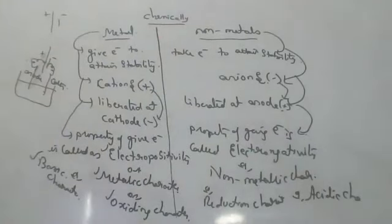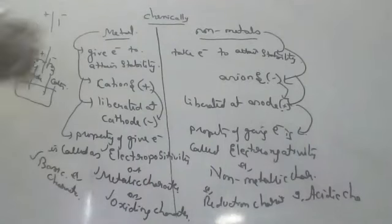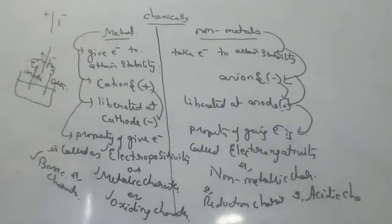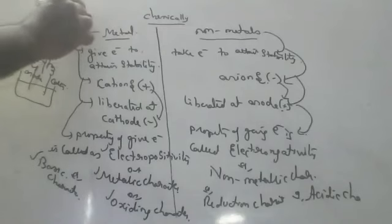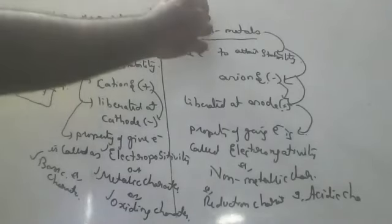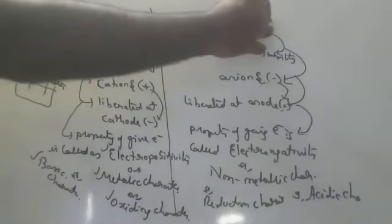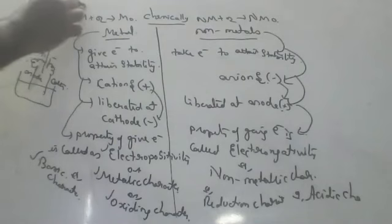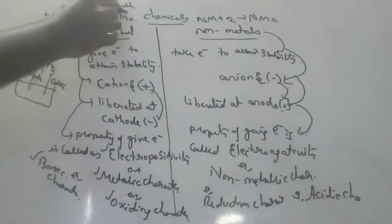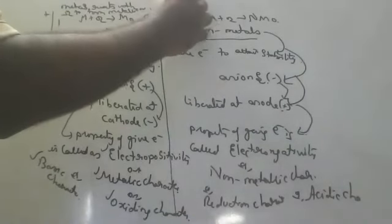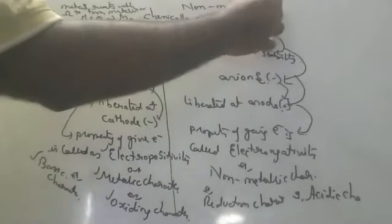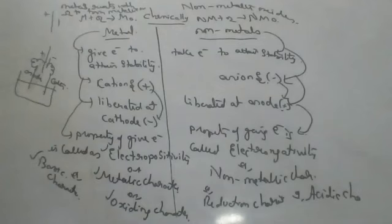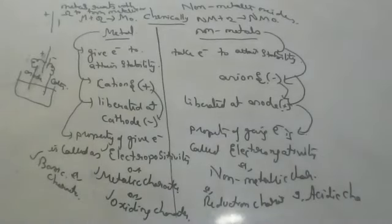One more chemical difference: metals react with oxygen to form metallic oxides. Non-metals react with oxygen to form non-metallic oxides. Please write this down — metals react with oxygen to form metallic oxides; non-metals react with oxygen to form non-metallic oxides. This is a basic but important difference.